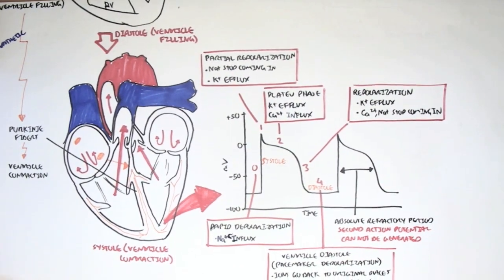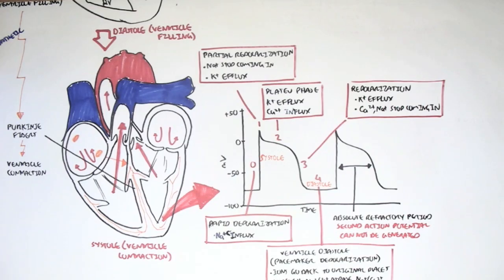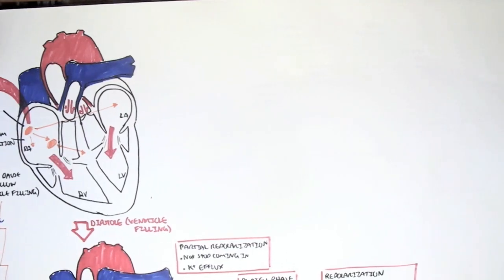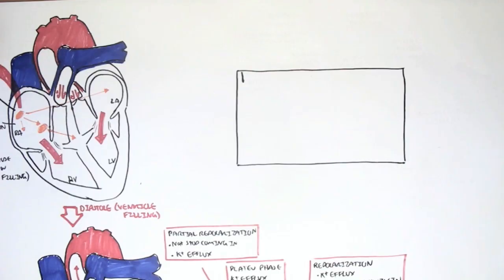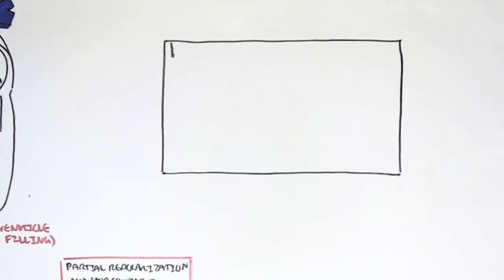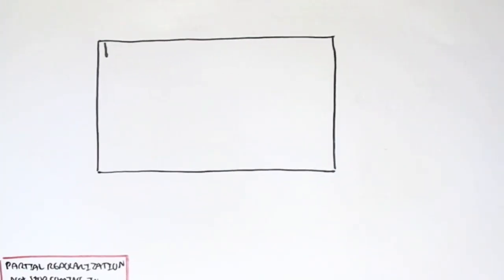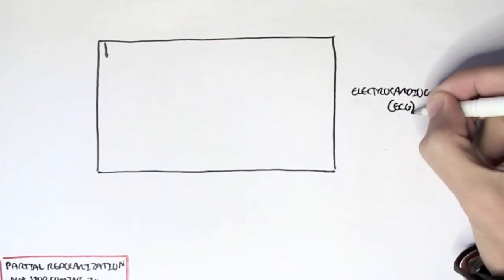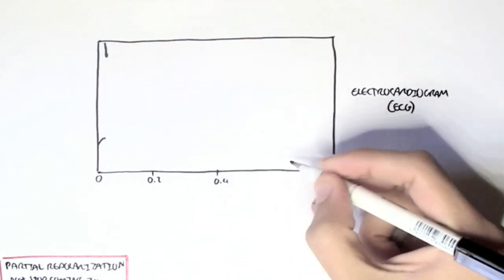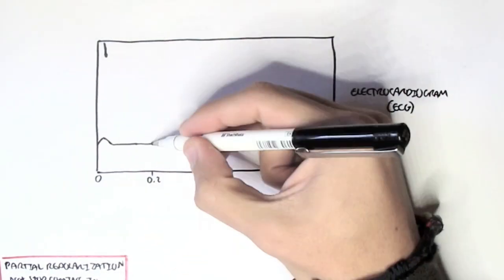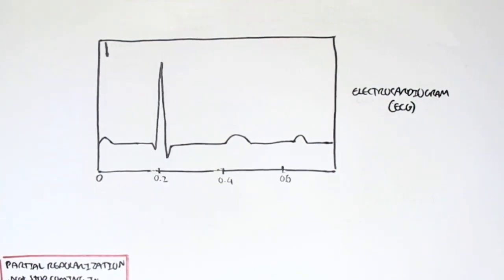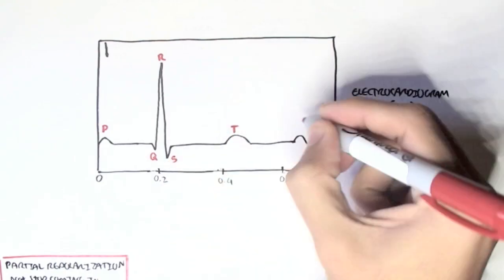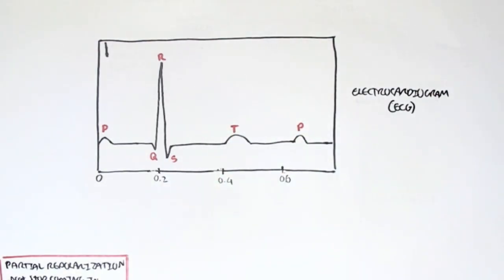Now let's look at an electrocardiogram. You might see these at hospitals when patients are being monitored, which is very important especially in intensive care. The normal cardiac cycle time is about 0.8 seconds. We can label these phases during the cycle starting from P: P, Q, R, S, T — and there is also a U, but that usually doesn't get brought up.